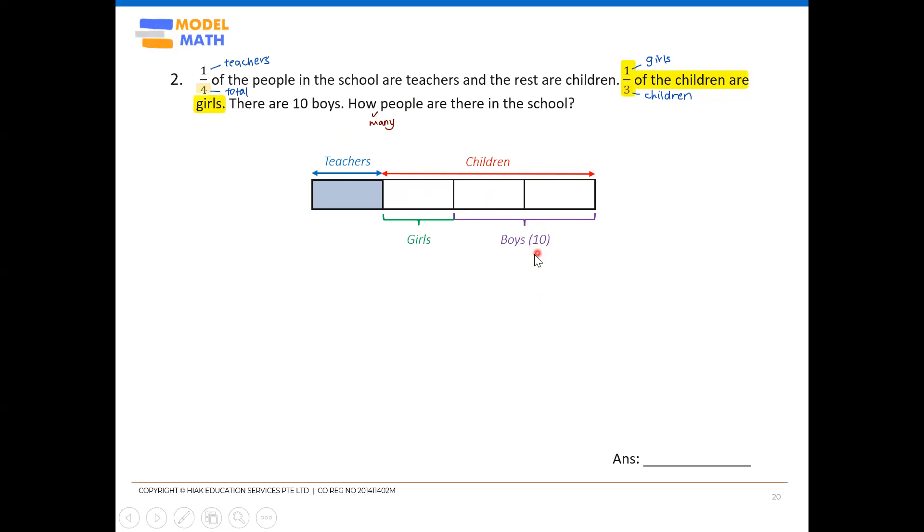Once your model is done, you notice that now you can start working with the ten boys. How many units is the ten? As we can see, it's the two units. So two units is ten. Always find the value of one unit next. One unit will be ten divided by two, which will be five people.